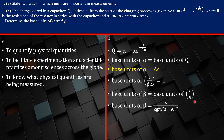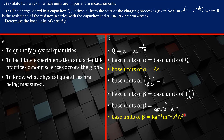The unit of t is seconds. For R, it comes from P = I²R, so R = P / I². Power equals force times velocity, giving us kg·m·s⁻¹ multiplied by m·s⁻¹, which is kg·m²·s⁻³. Dividing by ampere squared gives kg·m²·s⁻³·A⁻². Those are the SI units of resistance.